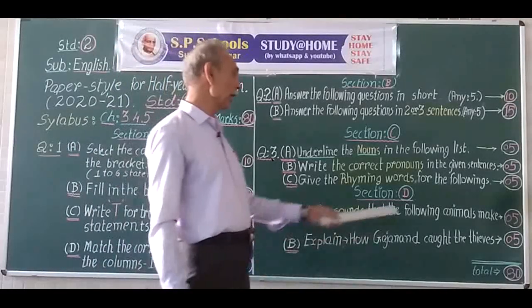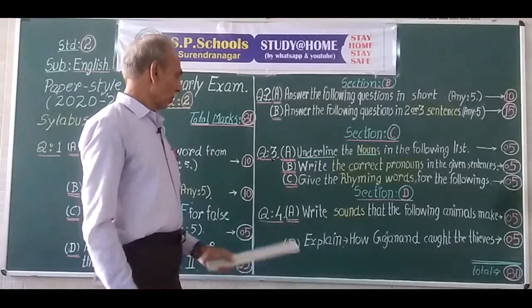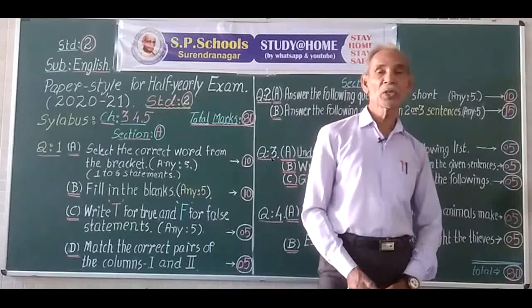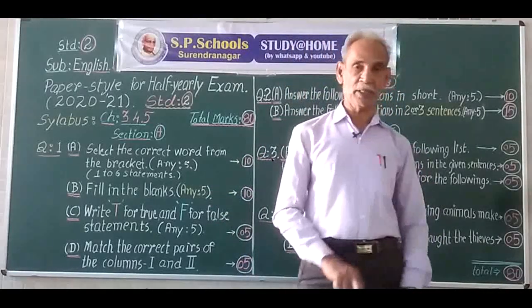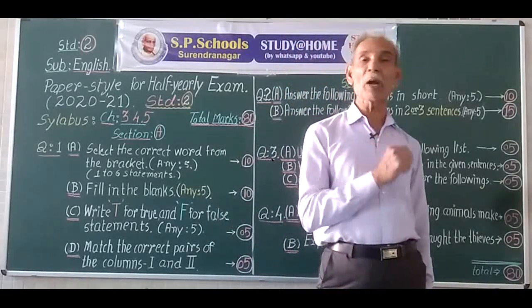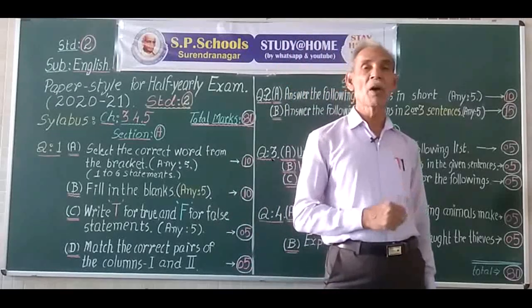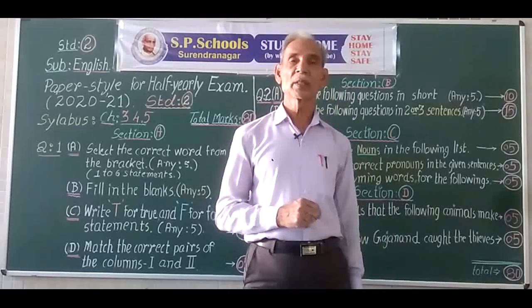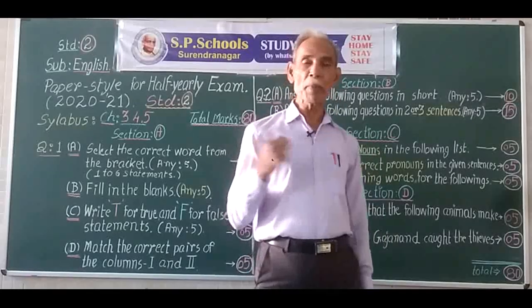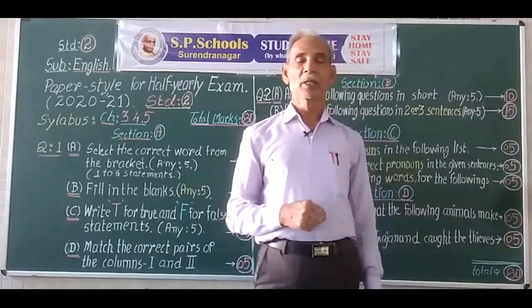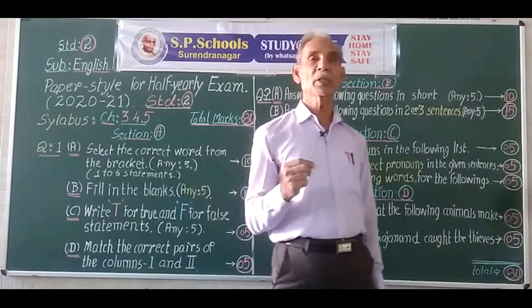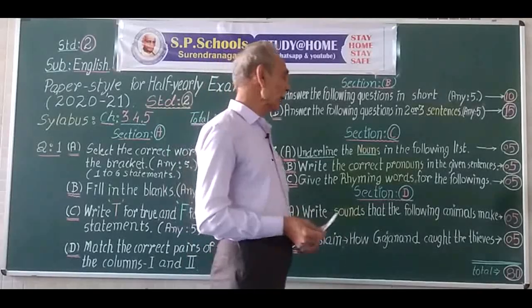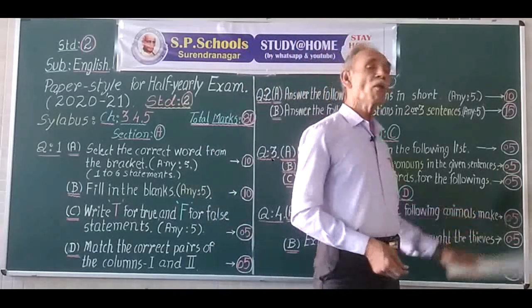Now for Section D. Question 4A is about the sounds that growing animals make. You will be given a list of some animals. Animals make special types of sounds and we have named these sounds — for example, a dog barks, a lion roars. In this way, you have to write what sound a particular animal makes to get the marks.